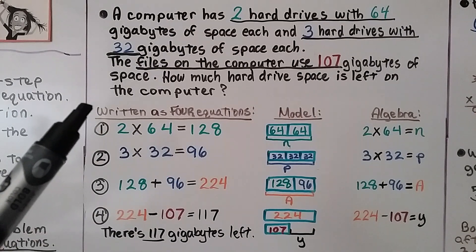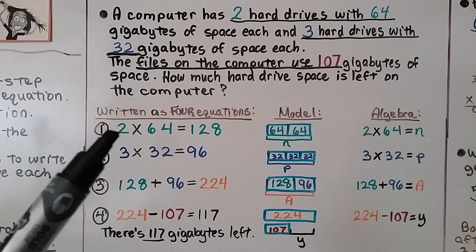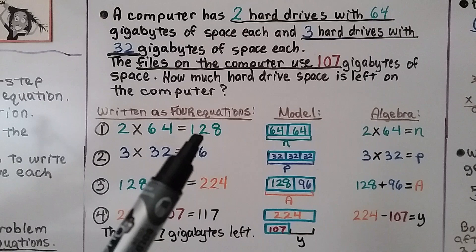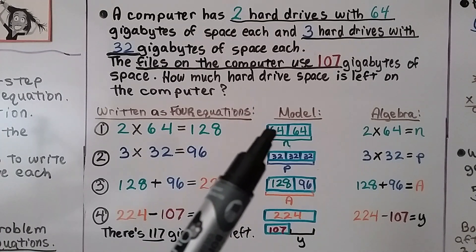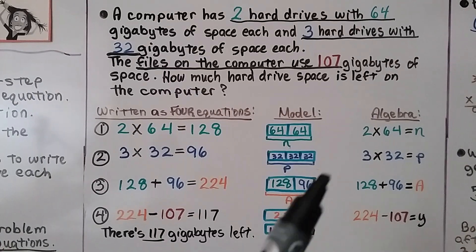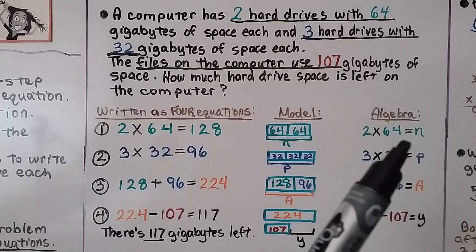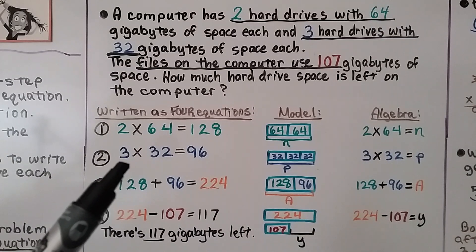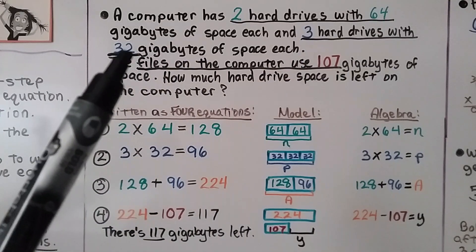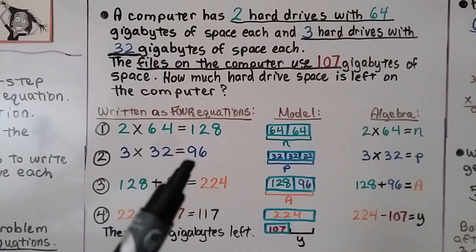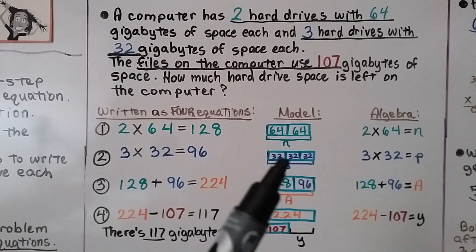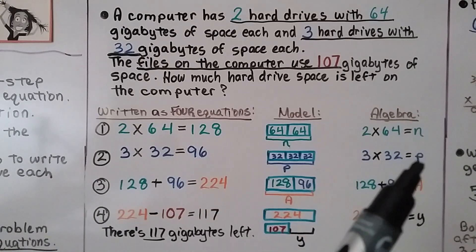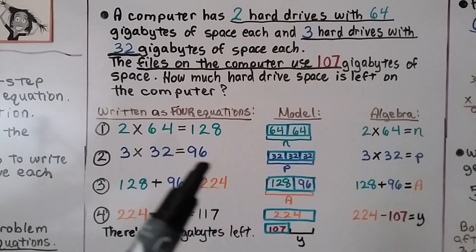This can be written as four one-step equations. First: 2 times 64 for the 2 hard drives with 64 gigabytes equals 128. We can model it with a bar model with two boxes of 64, and in algebra write 2 times 64 equals n. Second: 3 times 32 for the 3 hard drives with 32 gigabytes equals 96, modeled with 3 boxes of 32, and in algebra written as 3 times 32 equals p.